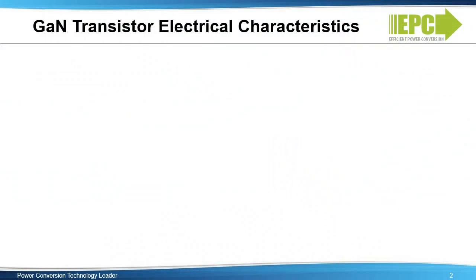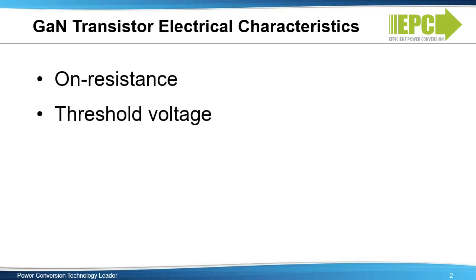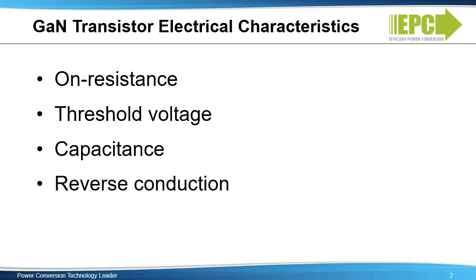The most basic transistor parameters are on resistance and threshold voltage. Furthermore, in order to understand how this device will work when switched on and off, capacitance and the reverse conduction characteristics of the device need to be added. These electrical characteristics will be compared to silicon power MOSFETs to explore both their similarities and differences. Understanding these similarities and differences is fundamental to understanding the extent to which existing power conversion systems can be improved by applying GAN-based technologies.